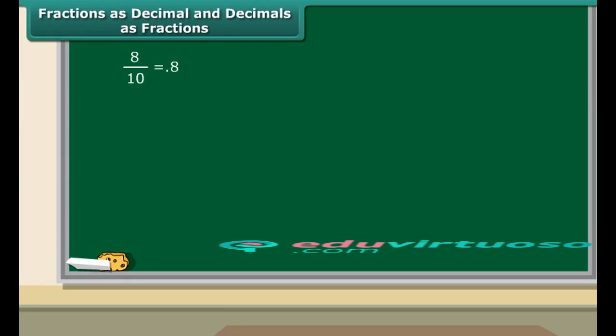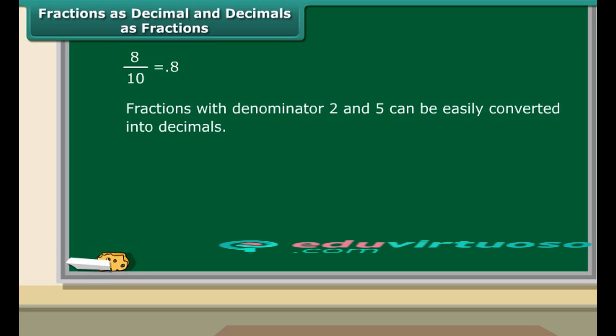We know that a fraction with denominator 10 can be represented using decimals. Now let us learn to convert fractions with denominator 2 or 5 into decimals. Take the example of 12/5. First, convert the denominator of the fraction into 10 in order to know how many tenths are involved. To know the number of tenths, multiply and divide the given fraction by 2. This gives the new fraction 24/10. So we have 2 ones and 4 tenths, or 2 ones and 0.4, which makes it 2.4.